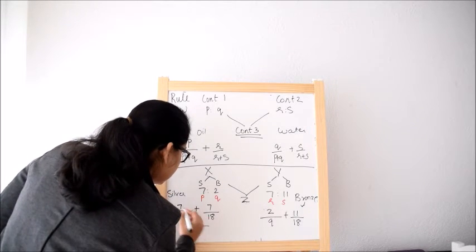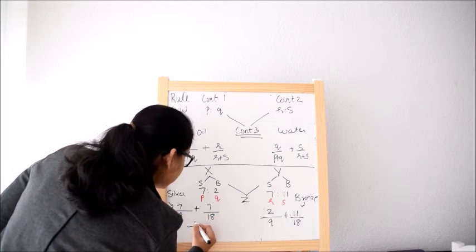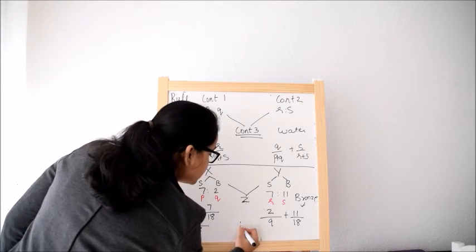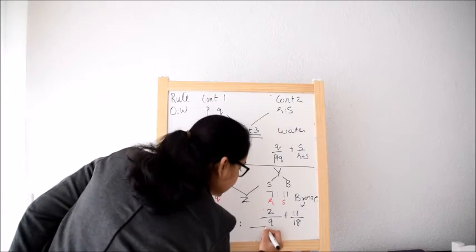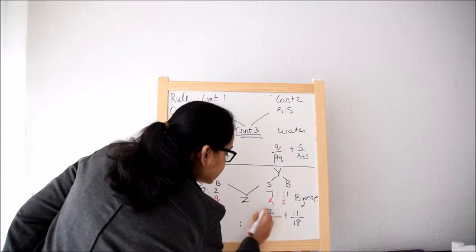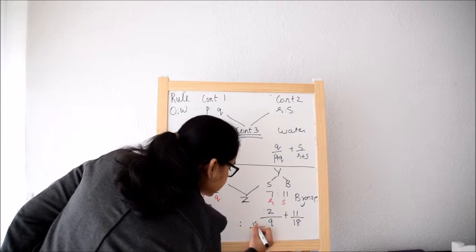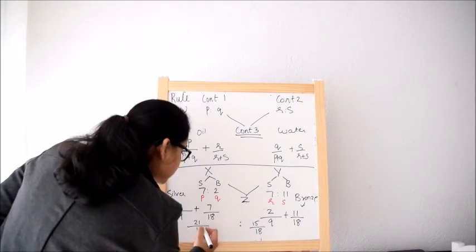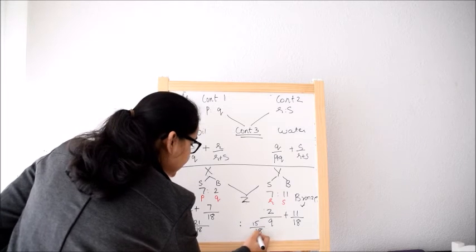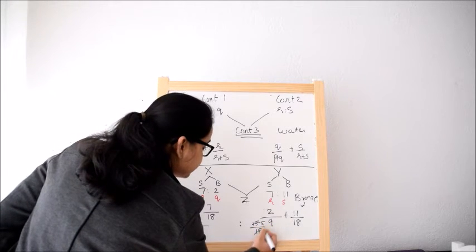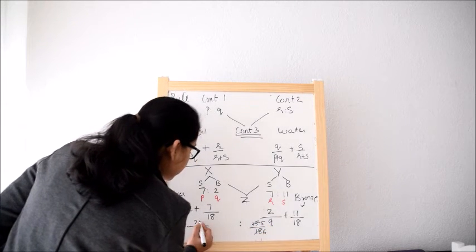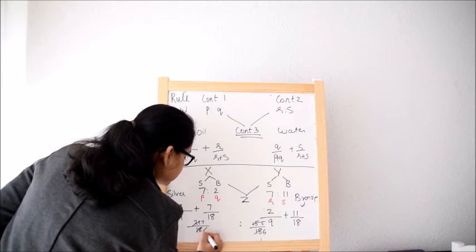So when we solve this, this will be 18 and this will be 14 plus 7 is 21 is 2. This is again 18, the LCM is 18 and this is 4 plus this is 15. So these will be cancelled, this is 5, 3, 5s are 3, 6s are 3, 7s are 3, 6s.